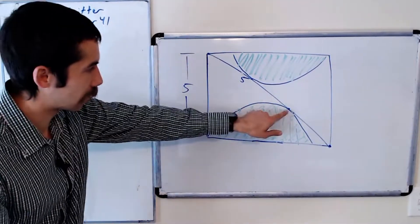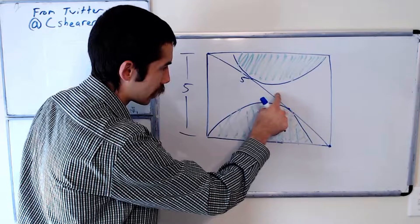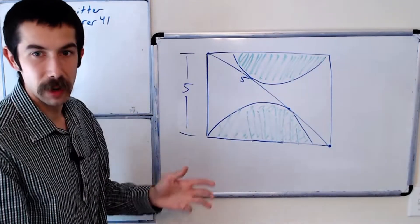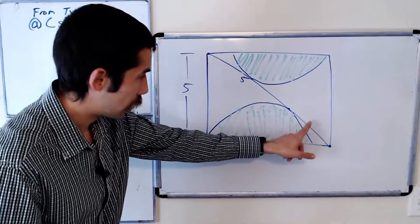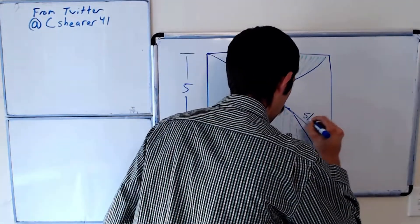So from here to here is 5, and we know that our region is broken up into thirds, so that was given to us. So this section here is 5 halves.